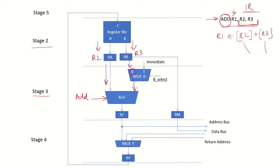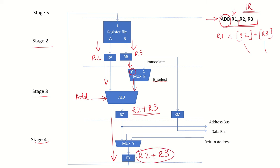The computation R2 plus R3 takes place and the result is placed in RZ. In stage 4, which is the memory access stage, no memory access is required for this instruction. So the result is passed on to RY, which now contains R2 plus R3 at the end of stage 4. In stage 5, this result is written back to register R1, so R1 is updated with the correct result of R2 plus R3.